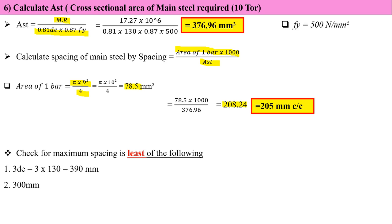I got 205 mm center to center. Let me check with maximum spacing allowed by IS code norms. We have two conditions: 3DE, multiplying 3 by effective depth gives 390 mm. Second condition is 300 mm. Least of both is 300 mm.